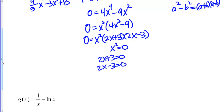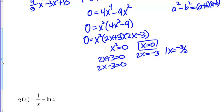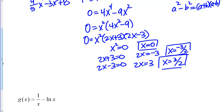From x² = 0, I get x = 0. From 2x + 3 = 0, I get x = −3/2. From 2x − 3 = 0, I get x = 3/2. So I have three critical points: x = 0, x = −3/2, and x = 3/2.